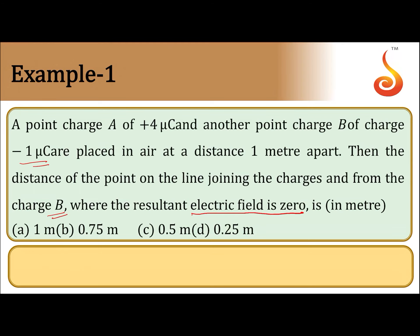Charge B is minus 1 microcoulomb and charge A is 4 microcoulomb. Notice one thing: they have asked you to calculate the distance of the point of zero electric field, what we call the null point. We need to find the null point — the distance measured from 1 microcoulomb, that is the weaker charge, compared to 4 microcoulomb.